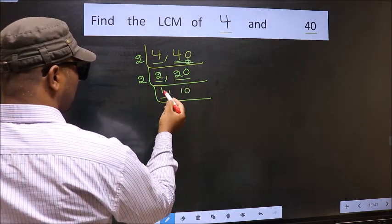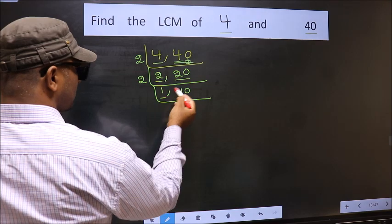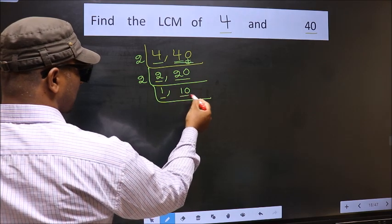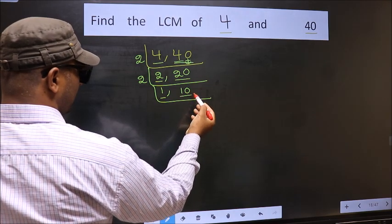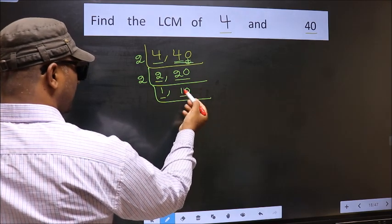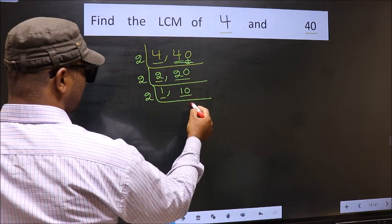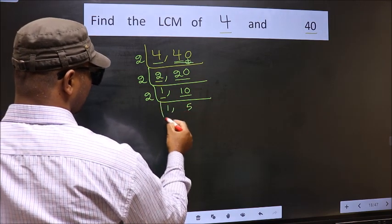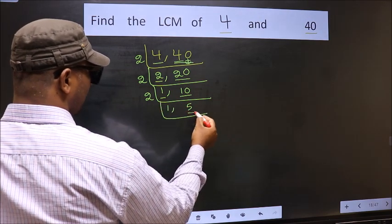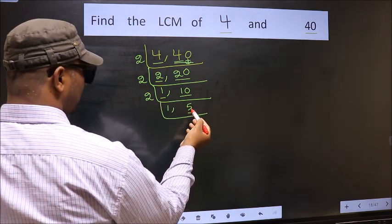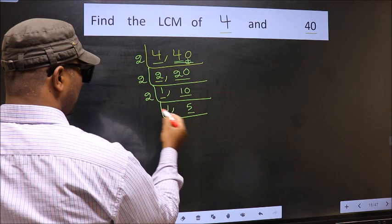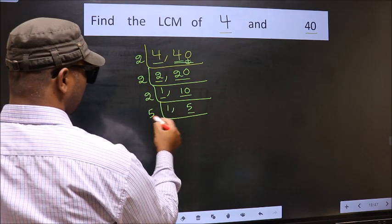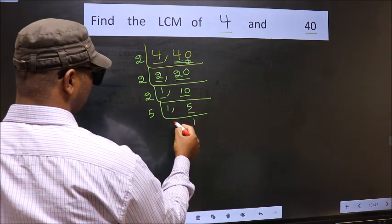Now we got 1 here, so focus on the other number: 10. 10 is 2 times 5. Now we have 5. 5 is a prime number, so 5 times 1 is 5.